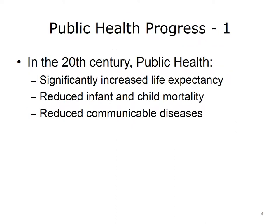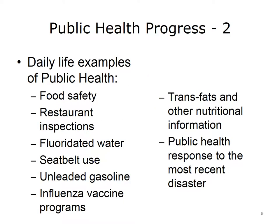This lecture discusses the value and effect of public health. In the 20th century, public health made radical improvements to population health. Its achievements include a significant increase in life expectancy and similarly significant reductions in both infant and child mortality and communicable diseases. The improvements made by public health have become such a normal part of everyday life in the U.S. that we are often not even aware of them. However, it is nearly impossible to spend a single day unaffected by public health. This slide lists some examples of these public health achievements.